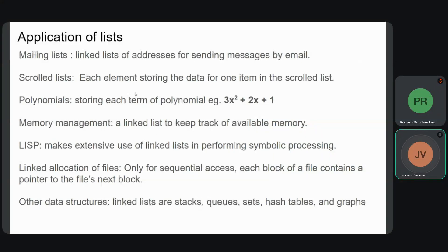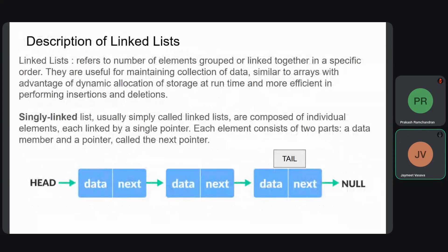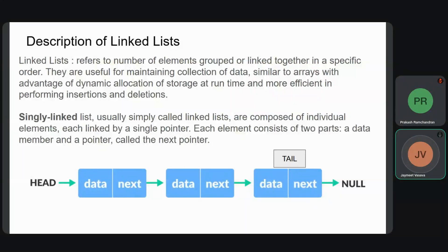So what are these linked lists mentioned in these examples? A linked list refers to a number of elements grouped or linked together in a specific order. They are useful for maintaining collections of data similar to arrays, with the advantage of dynamic allocation of storage at runtime and more efficiency in performing insertion and deletion operations. The topic of this presentation is singly linked lists, usually simply called linked lists, which are composed of individual elements each linked by a single pointer. Each element consists of two parts: a data member and a next pointer, which points to the next element in the list.